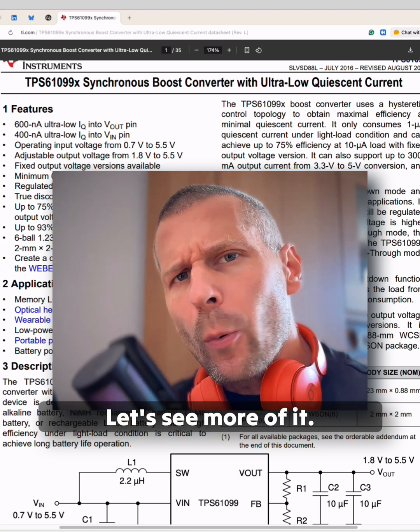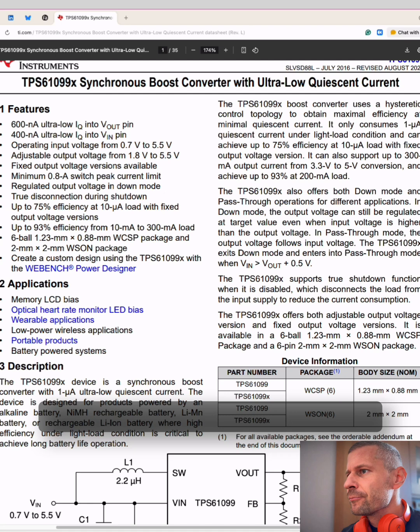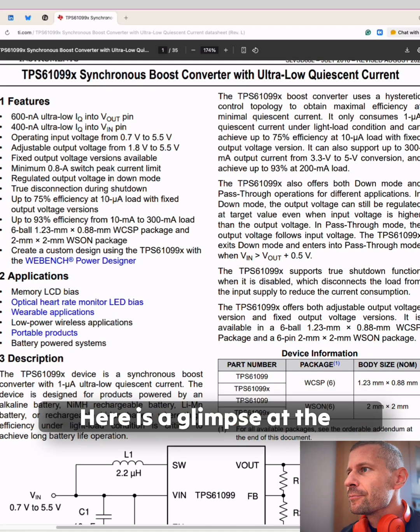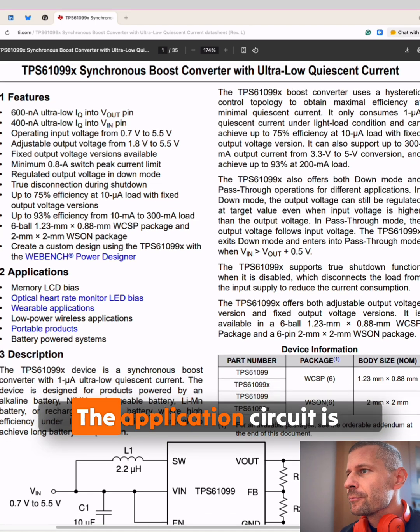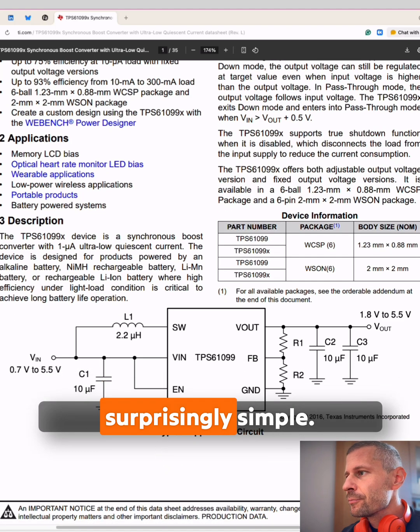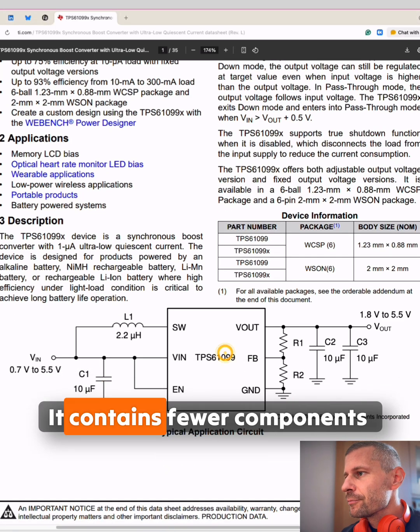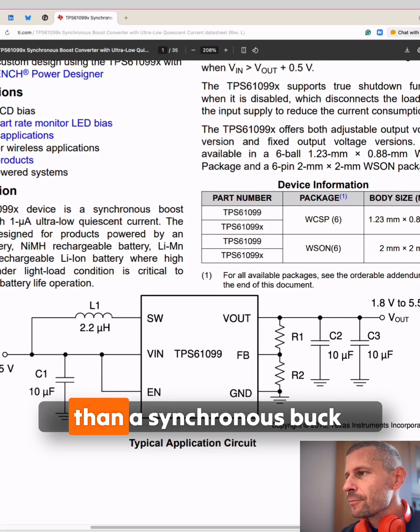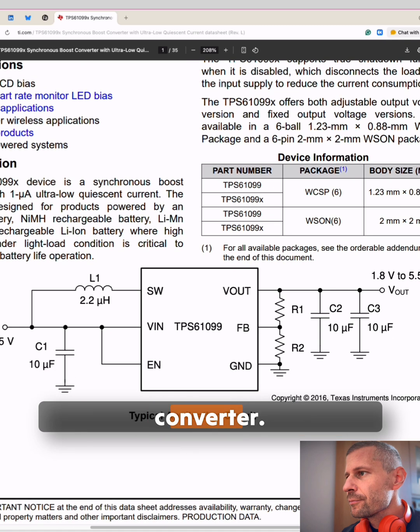Let's see more of it. Here is a glimpse at the datasheet. The application circuit is surprisingly simple. It contains fewer components than a synchronous buck converter.